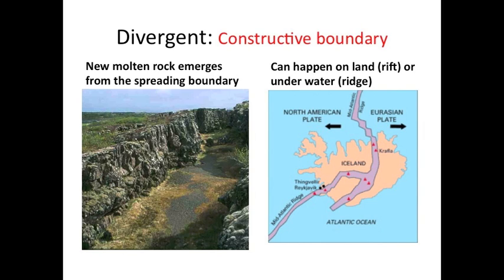Here's a photo of Iceland where this fault line has moved apart. Between them we have new crust forming. The rock here would be new or relatively young compared to the rest of the island. This divergent boundary can be on land, and when we see it on land we call it a rift. When it diverges underwater we call it a ridge. However, they mean the same thing.